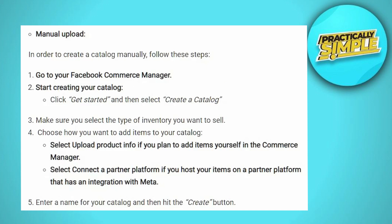Ensure you specify the type of inventory you intend to offer. Then decide on the method to add items through the catalog — choose the option that says 'Upload Product Info' if you plan to add items manually using Commerce Manager. Alternatively, choose 'Connect a Partner Platform' if your items are hosted on a partner platform integrated with Meta.